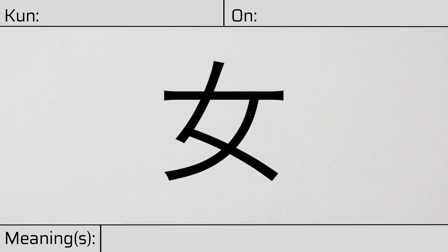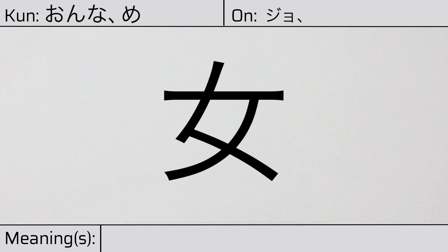Welcome to this lesson on Japanese kanji. Today, we'll be discussing this character. This kanji has a kunyomi, or Japanese reading of onna or me. And it has an onyomi, or Chinese readings of jo, nyou, or nyou.